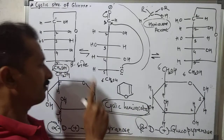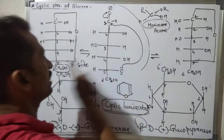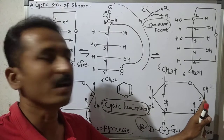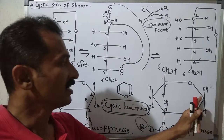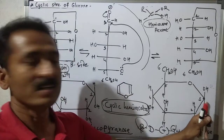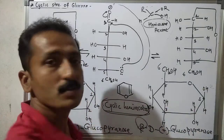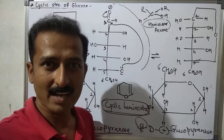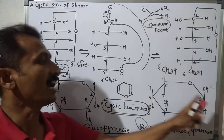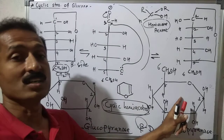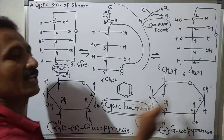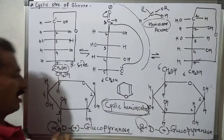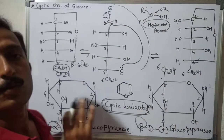In these two structures, there is only a difference at the anomeric carbon. The two cyclic hemiacetals differ in the configuration of carbon number 1. In alpha, the OH is below (lower side); in beta, the OH is above. Such structures differing at the configuration of carbon number 1 are called anomers, and these carbon atoms are called anomeric carbons. One is the alpha anomer and the other is the beta anomer. This is the cyclic structure of glucose.